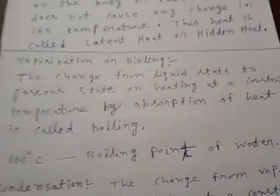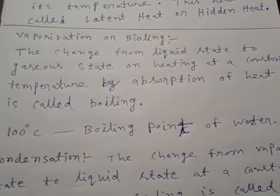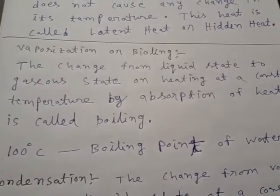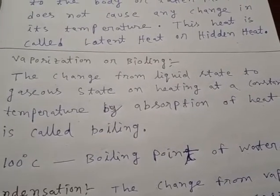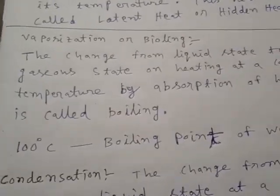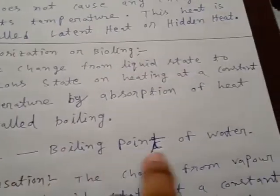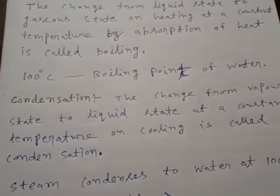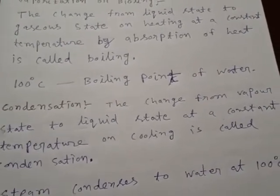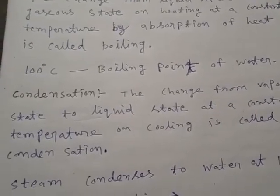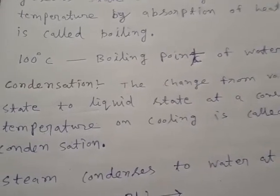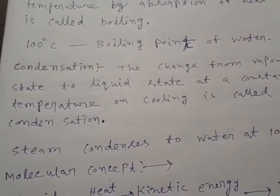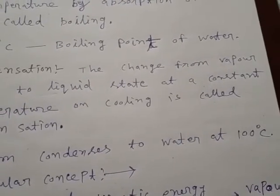Now let's move to the concept of vaporization or boiling. The process in which liquid changes into gaseous state on heating at a constant temperature by absorbing heat is called boiling or vaporization. That fixed temperature is called the boiling point, which is 100 degrees centigrade for water. Condensation is the change from vapor or gaseous state to liquid state on cooling at a constant temperature. That constant temperature is called the condensation point — also 100 degrees Celsius in the case of steam, so steam converts into water at 100 degrees Celsius on cooling.